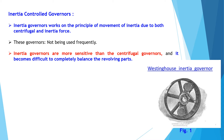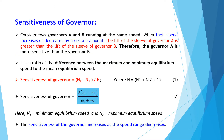An example of the inertia governor is the Westinghouse inertia governor, presented in figure 1. For the sensitiveness of the governor, we have considered two governors A and B running at the same speed. When their speed increases or decreases by a certain amount, the lift of the sleeve of governor A is greater than the lift of the sleeve of governor B. Therefore, governor A is more sensitive than governor B. The sensitiveness of a governor is the ratio of the difference between the maximum and minimum equilibrium speed to the mean equilibrium speed.